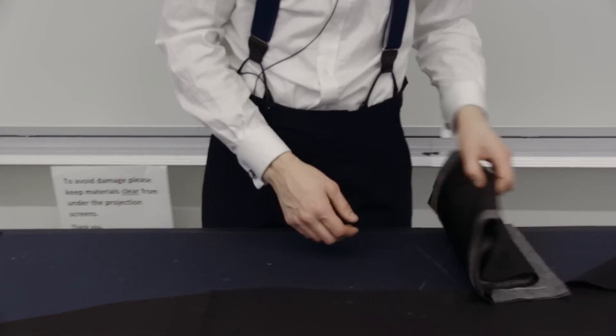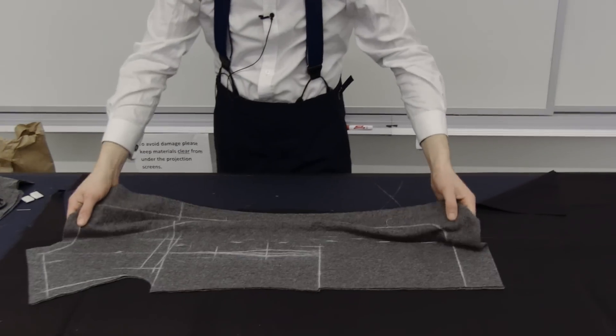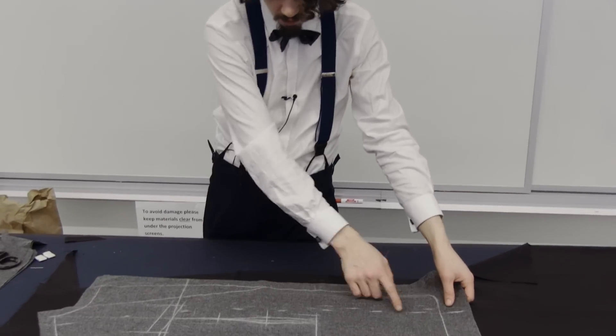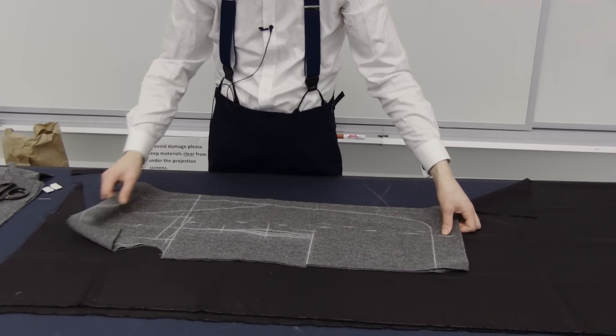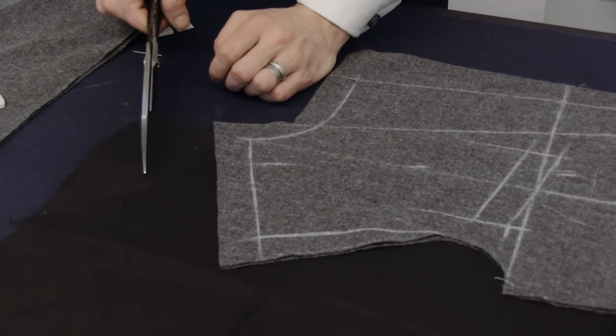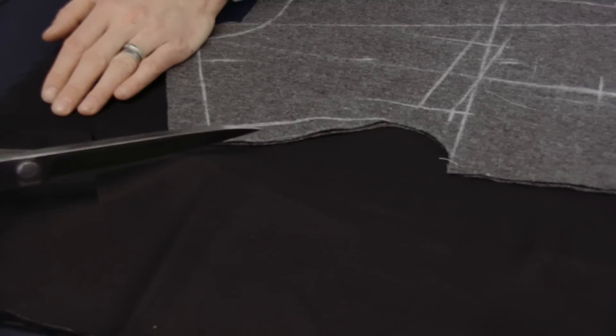Fold it and lift it out of the way. Now take the forepart. This curve here will join up with this curve here to maximize the width of our lining. Allow two inches across the top of our shoulder for the shoulder plate.